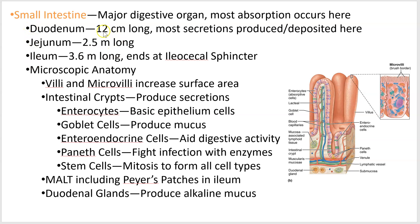Here are the three regions in order: duodenum, jejunum, ileum. If you add that up, that's over six meters, which is close to 20 feet long. It's a really long tube that starts after your stomach and ends right before your large intestine.